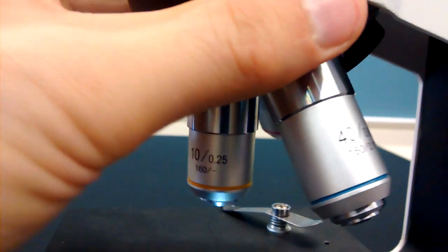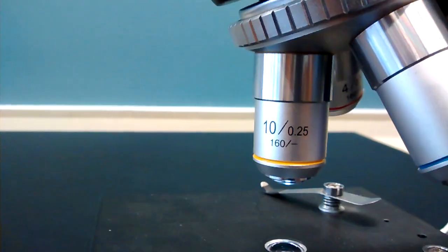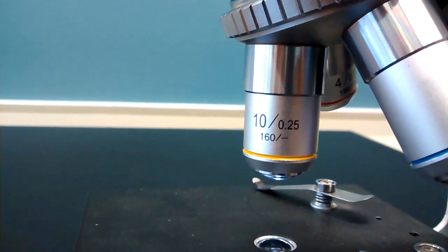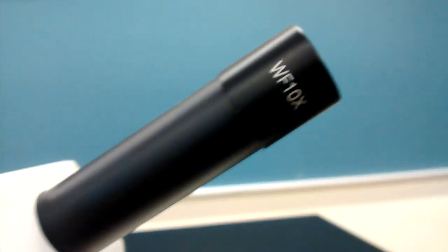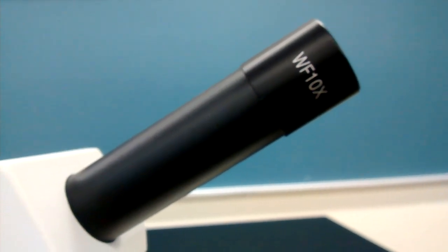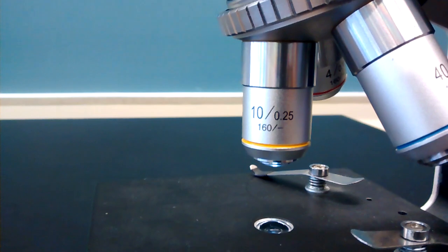The same is true of the low power lens. When using it, it will magnify ten times. Together with the ten times of the eyepiece lens, means that you're magnifying 100 times as large.